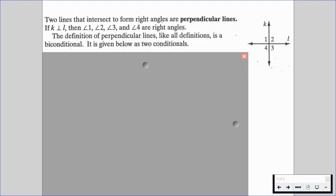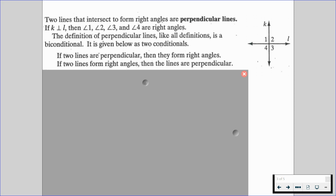The definition of perpendicular lines, like all definitions, is a biconditional. It is given below as two conditional statements. If two lines are perpendicular, then they form right angles, and if two lines form right angles, then the lines are perpendicular.